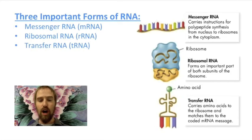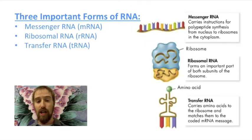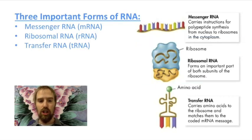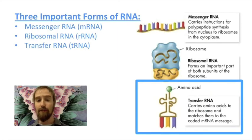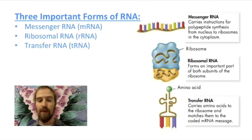So those are the three forms of RNA. Messenger, or mRNA, which carries instructions for building proteins from the nucleus to ribosomes in the cytoplasm. Ribosomal, or rRNA, which forms an important part of both the small and large subunits of a ribosome. And transfer, or tRNA, which carries amino acids to the ribosome and matches them to the correct codon in the mRNA strand. Although their overall shapes are different, each of these forms of RNA is made of the same basic stuff: chains of nucleotides.